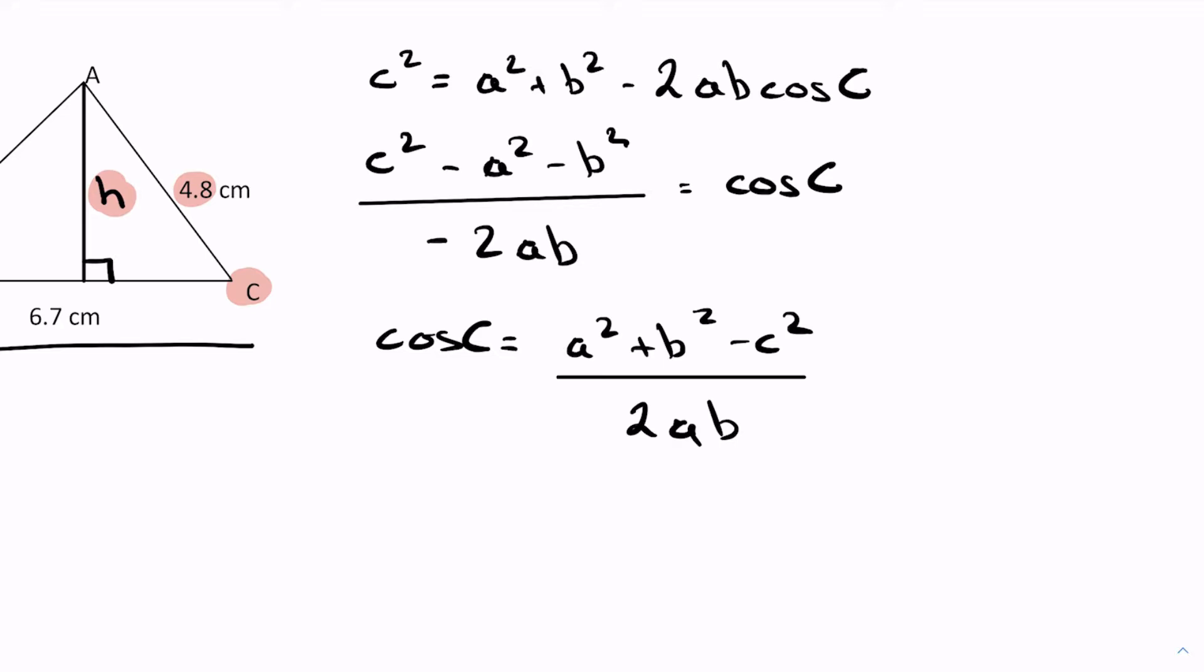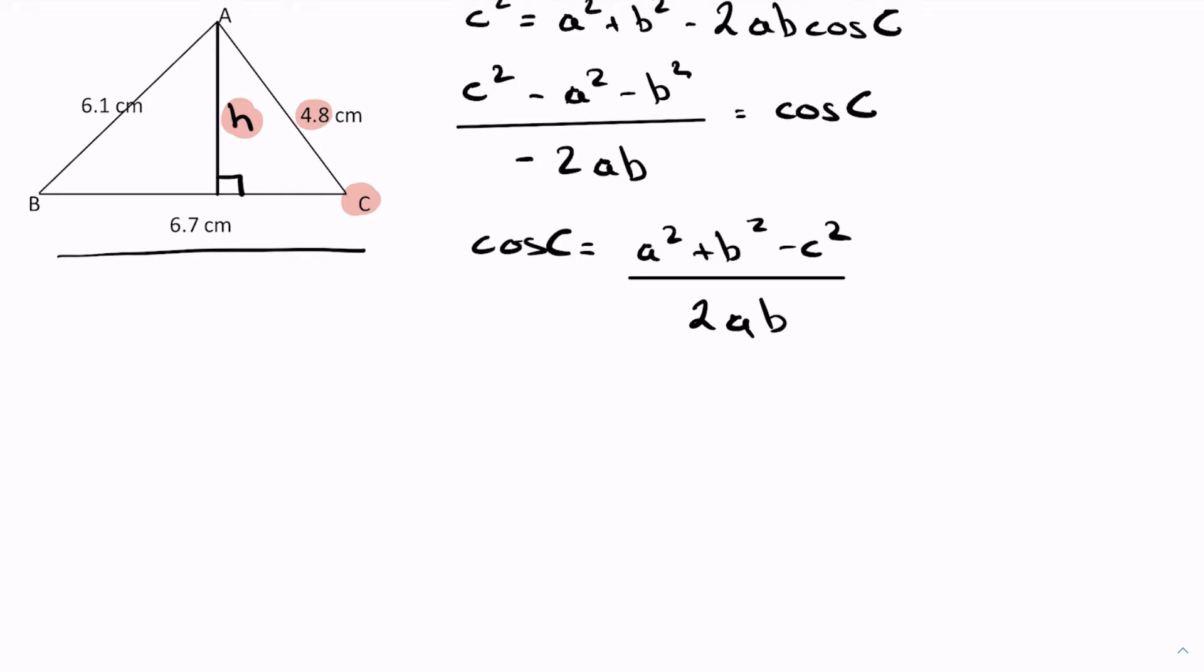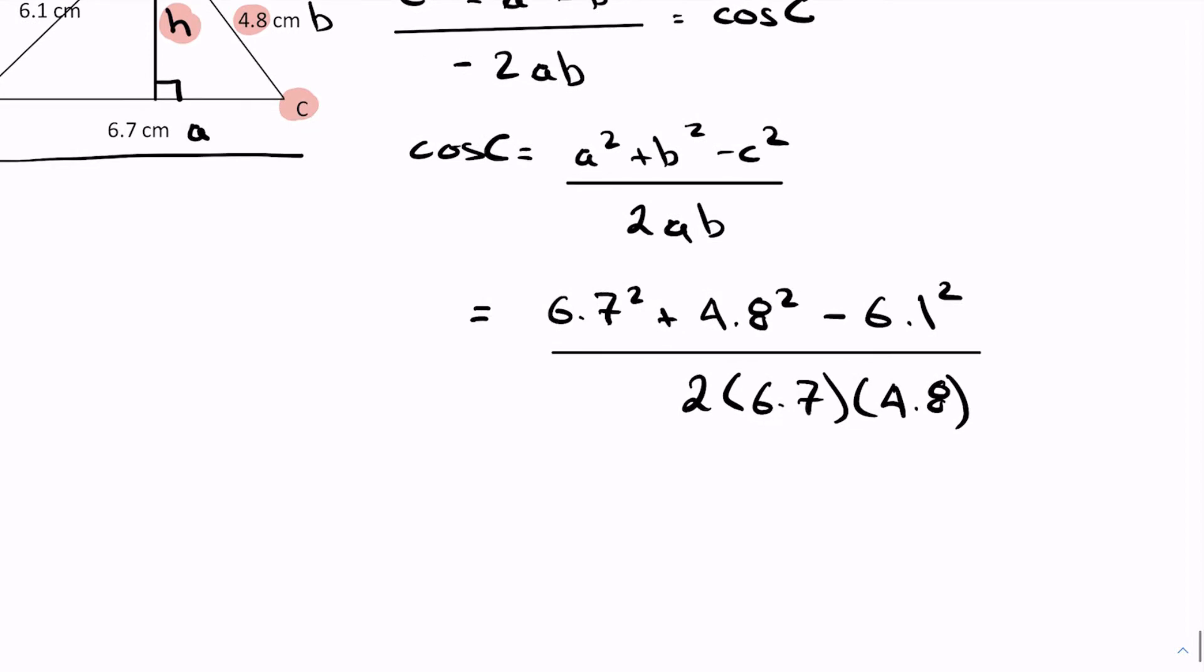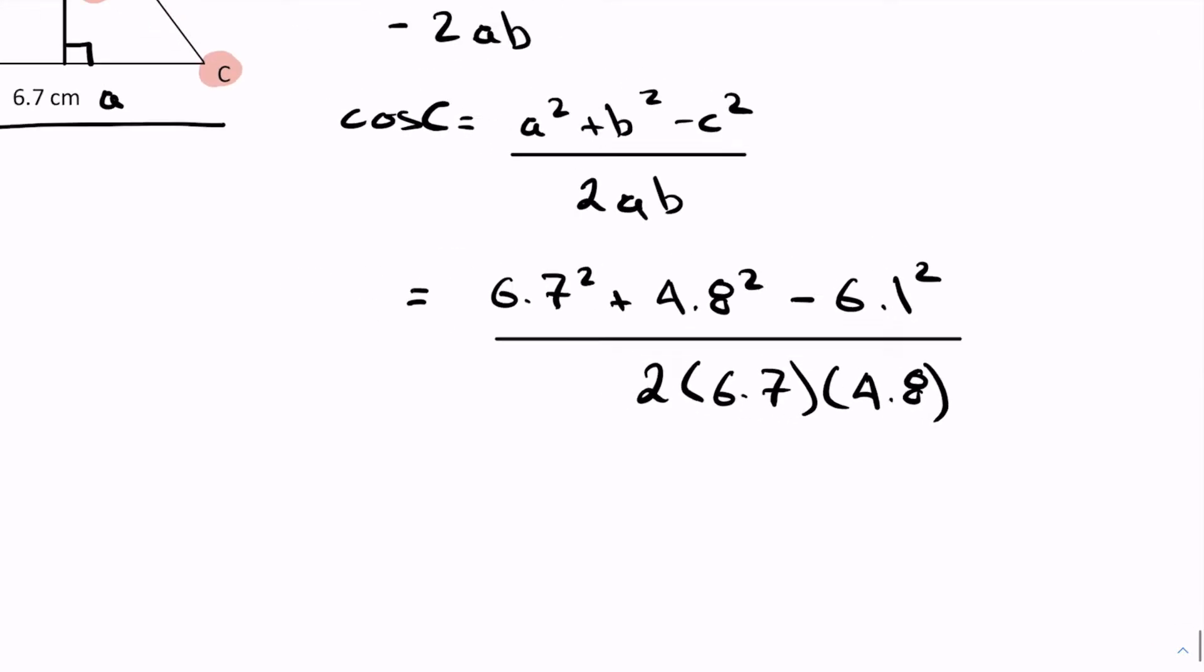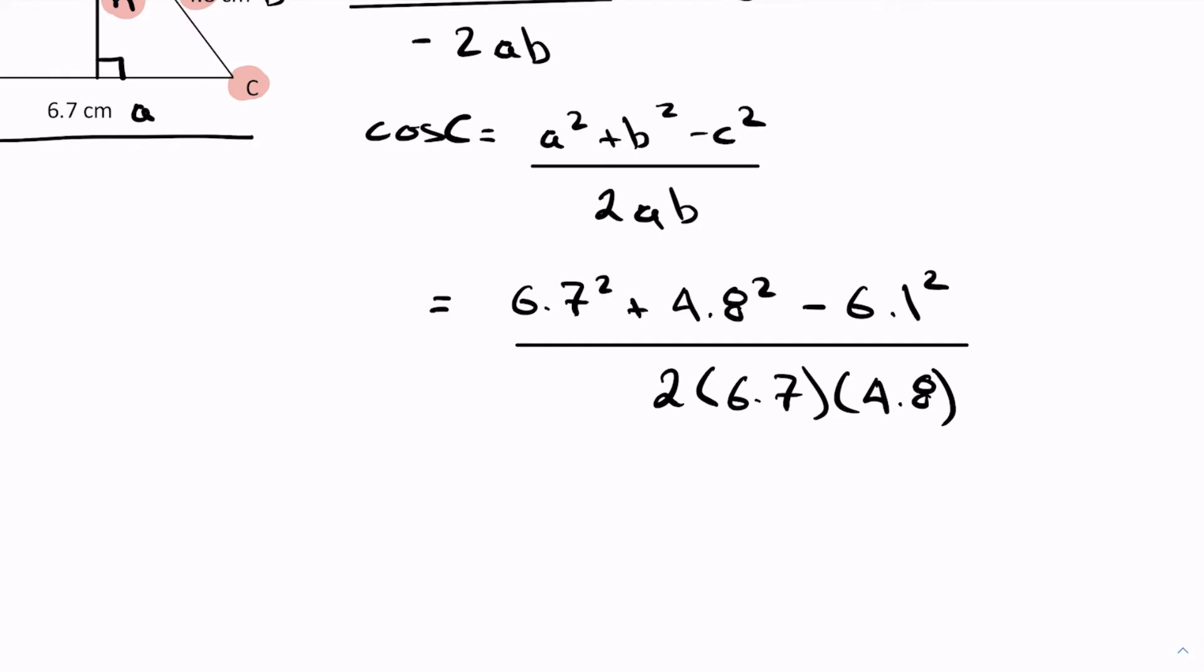Eventually you memorize these because you just use them so much. So let's start plugging in the values. For a this is going to be my side a, this is going to be my side b, this is going to be my side c. So I have here 6.7² + 4.8² - 6.1² all over 2 times 6.7 times 4.8. And at this point I'm gonna have to get my calculator out.